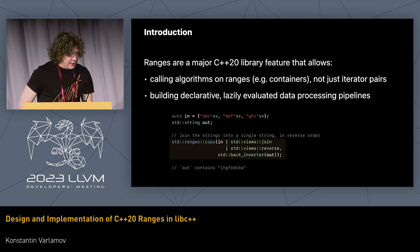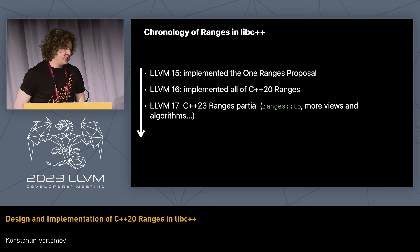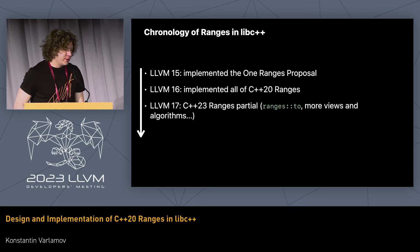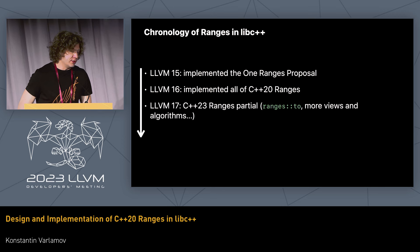Recently, ranges have been a major focus for Lib C++. In LLVM 15, we shipped everything in the original ranges proposal — about 90% of C++20 ranges, a huge proposal spanning literally hundreds of pages. In the next release we wrapped up the C++20 stuff and addressed additional bug fix papers. In the very recent LLVM 17 release, we started on the C++23 stuff. There's still more to do before C++23 ranges is finished.